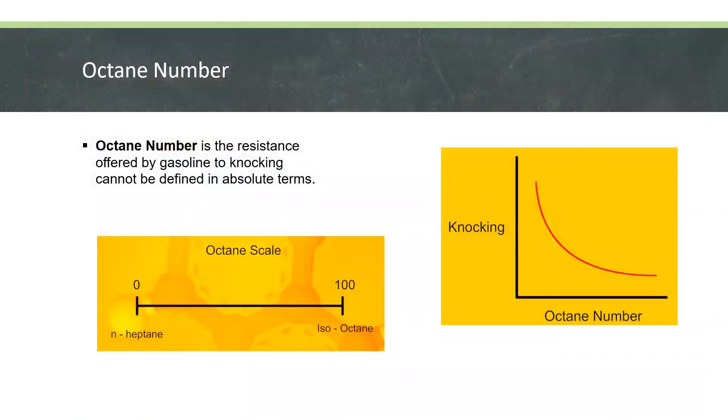The octane number is the resistance offered by gasoline to knocking. It cannot be defined in absolute terms. It has been found that n-heptane knocks very badly and hence its anti-knock value has been given zero. On the other hand, iso-octane gives very little knocking so its anti-knock value is given as 100.